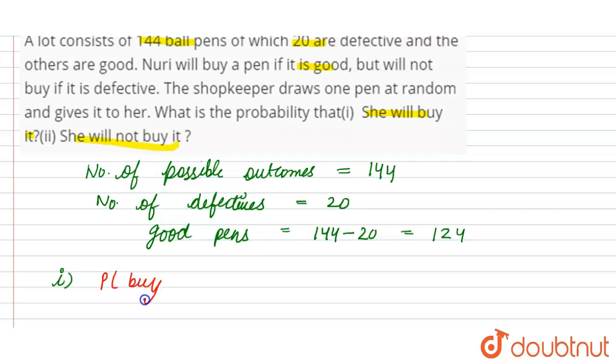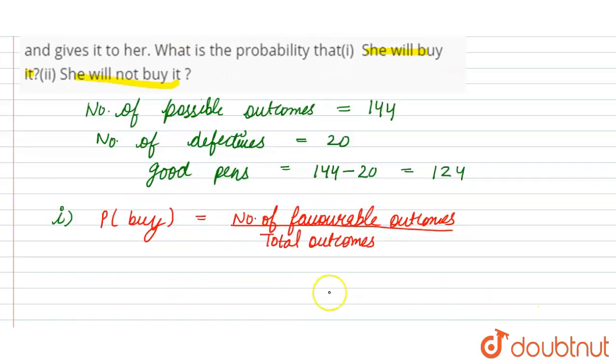Buy it means number of good pens. The probability formula is number of favorable outcomes divided by total outcomes. Favorable outcomes means number of good pens divided by total pens.